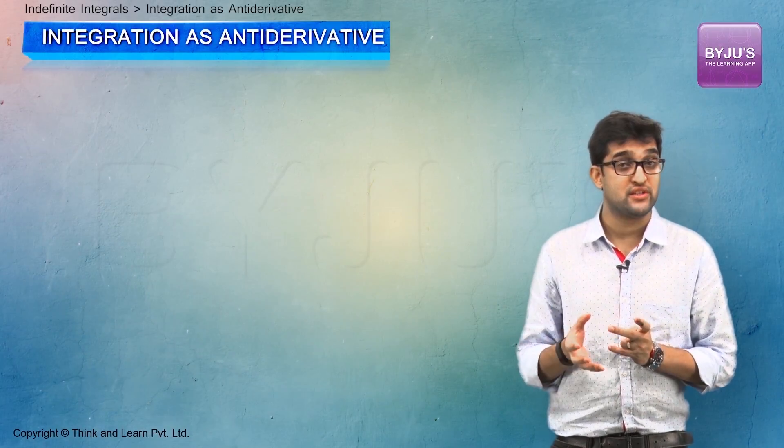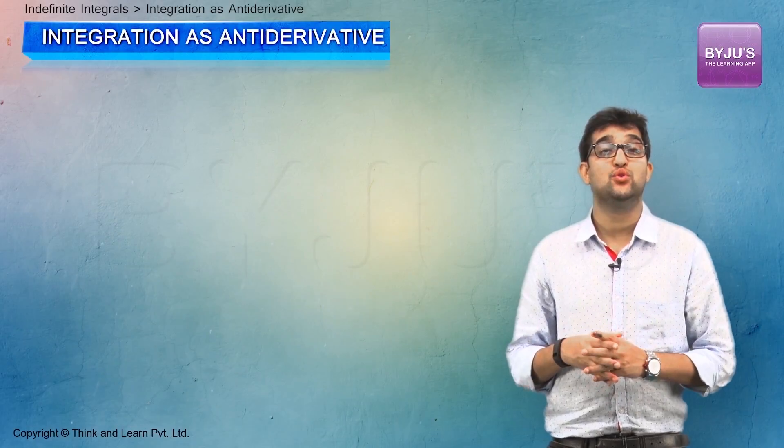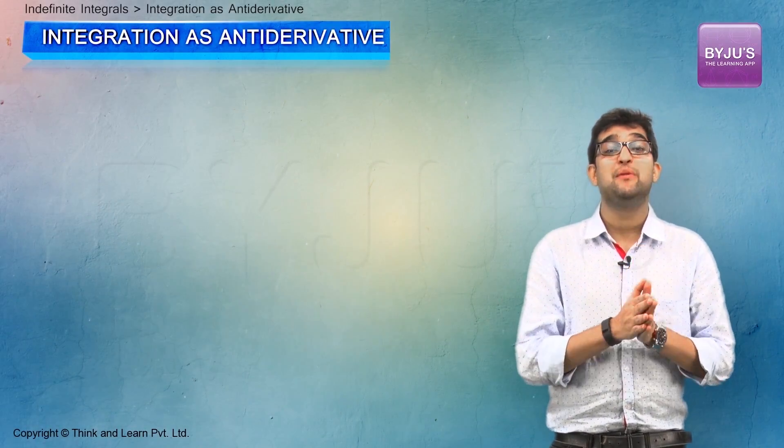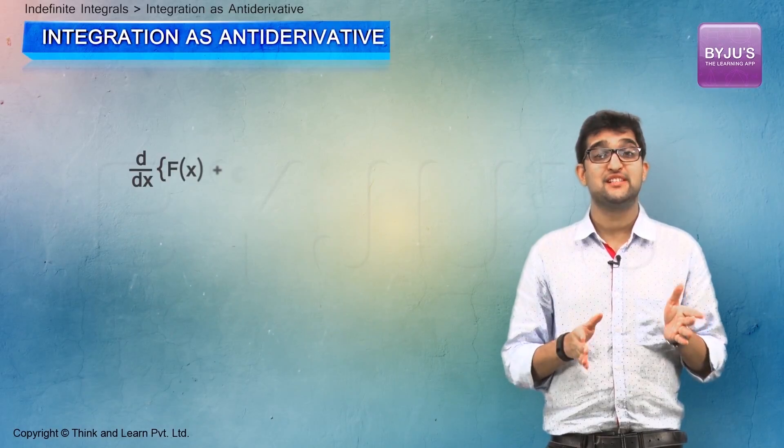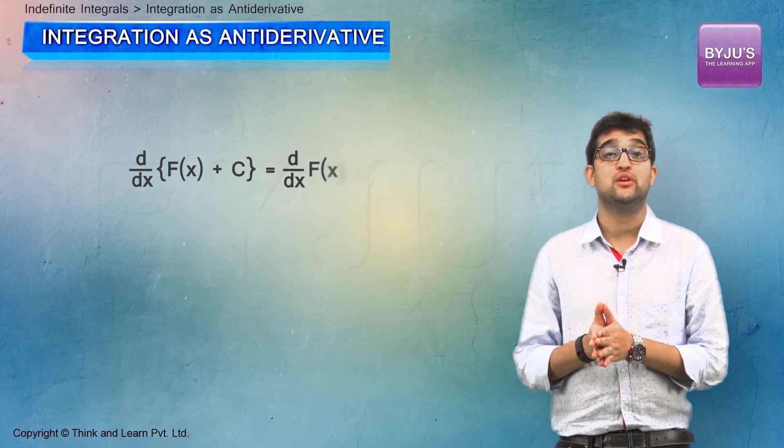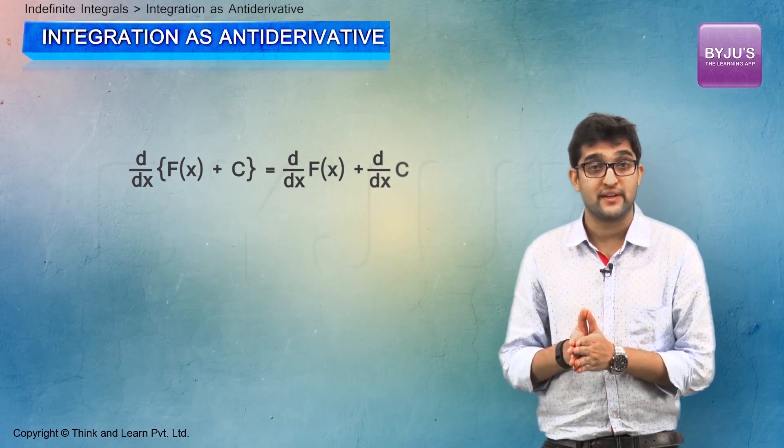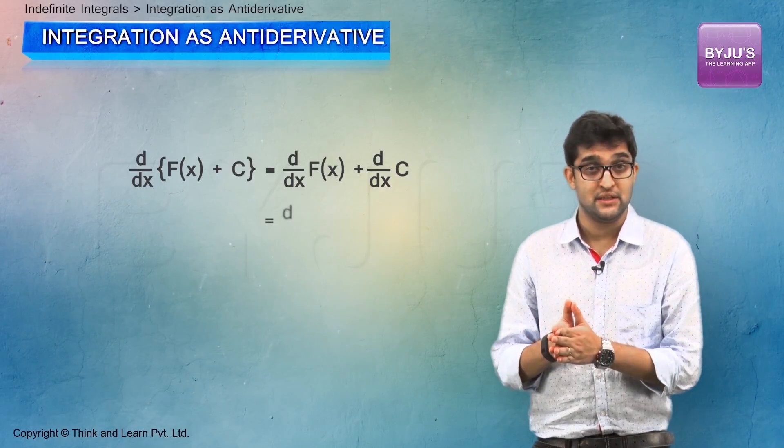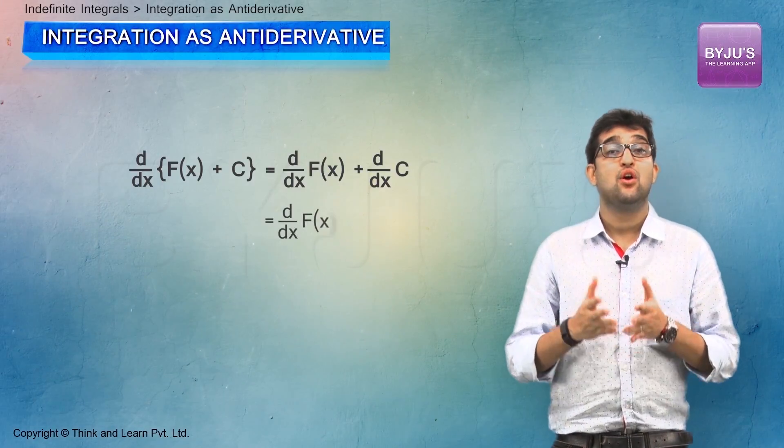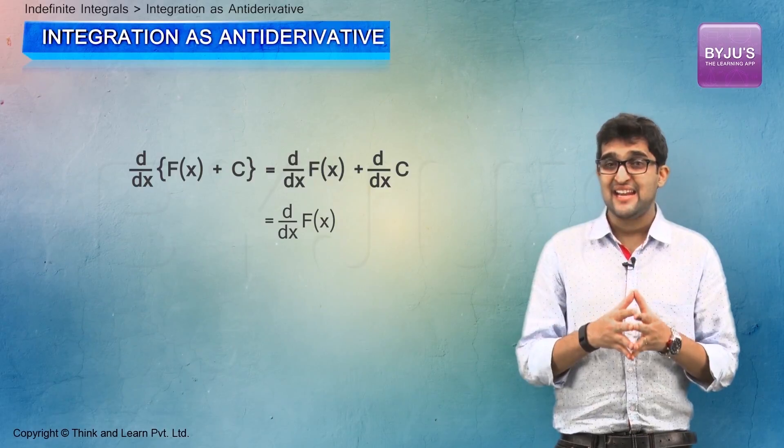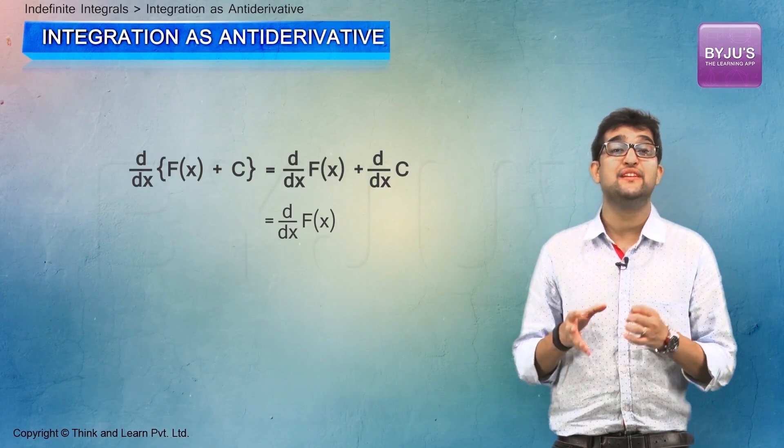For instance, d by dx of F of x plus C will be equal to d by dx of F of x plus d by dx of C, which you know is d by dx of F of x. Thus, the antiderivative or indefinite integral of a function is a function plus an arbitrary constant.